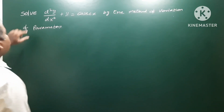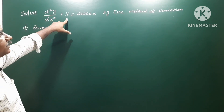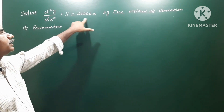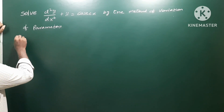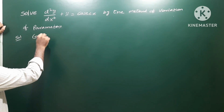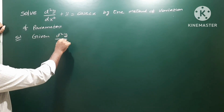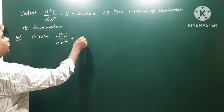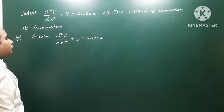The problem is to solve d²y/dx² + y = cosec(x). We have to solve this differential equation by the method of variation of parameters. First of all, write the given equation: d²y/dx² + y = cosec(x).